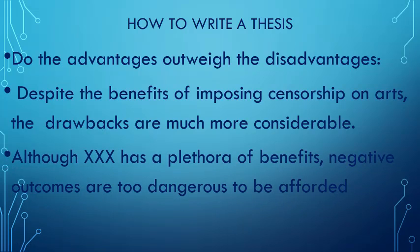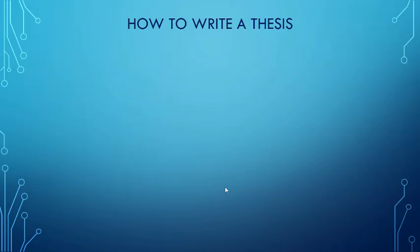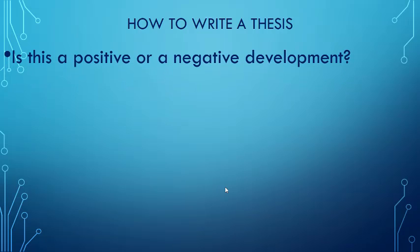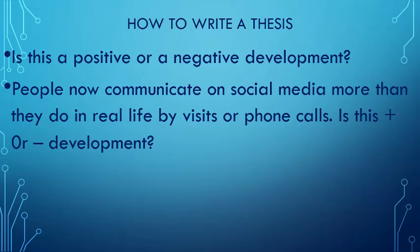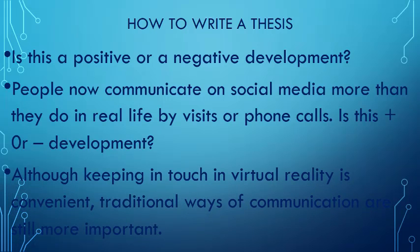Another example: 'Although [topic] has a plethora of benefits, negative outcomes are too dangerous to be afforded.' Here 'a plethora of benefits' means advantages, and 'negative outcomes' means disadvantages. Always rephrase. For 'is this a positive or a negative development' — for example, people now communicate on social media more than they do in real life by visits or phone calls. A good thesis might be: 'Although keeping in touch in virtual reality is convenient, traditional ways of communication are still more important.' This statement shows that you think it's a negative development.